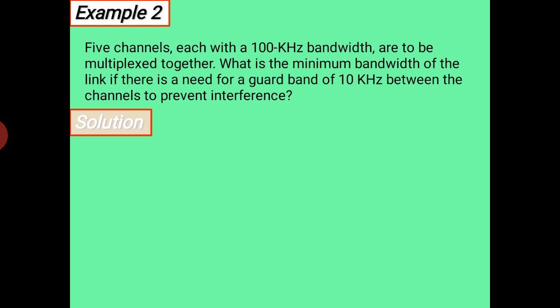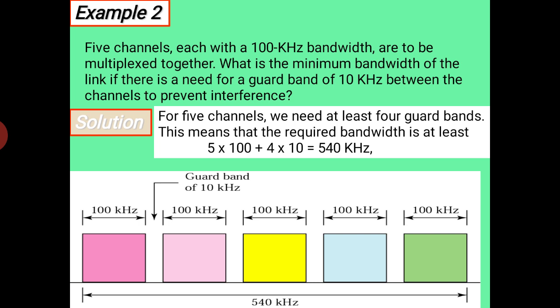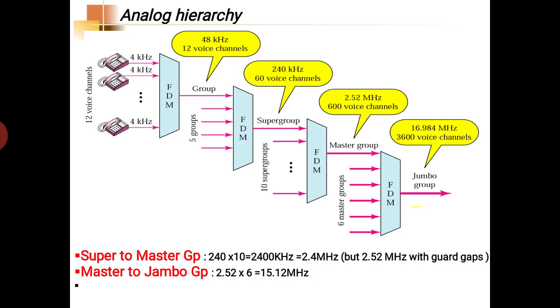We have five channels, so at minimum we need 500 kilohertz. We also need to maintain a gap between individual channels. For five channels, we need four guard bands, that is 4 into 10 equals 40 kilohertz. So the total bandwidth requirement is 5 into 100 plus 4 into 10, giving 540 kilohertz. By diagram we can represent this. I hope the concept of guard band is clear.